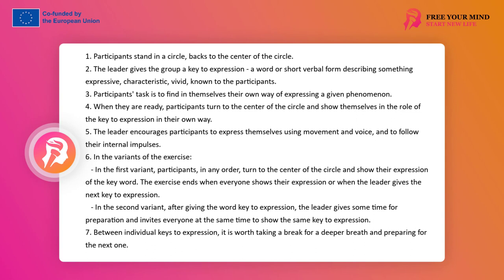The facilitator's task is to give the group an expression key, which is a word or a short verbal form describing something expressive, characteristic, vivid, and known to the participants — e.g., anger, fear, joy, pleasure as emotional states; or sun, storm, lightning, silence, wind, winter, summer, autumn, spring; or materials like steel, earth, wood; directions like east, west, north, south; or images like long braid, sharp nail, green meadow, family of swans, and so on.